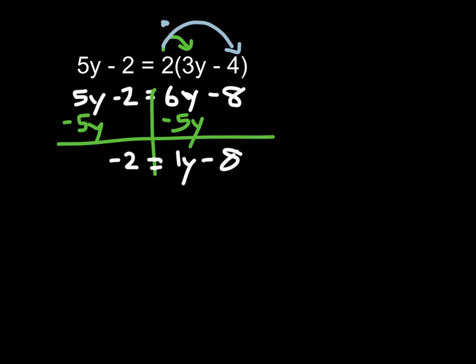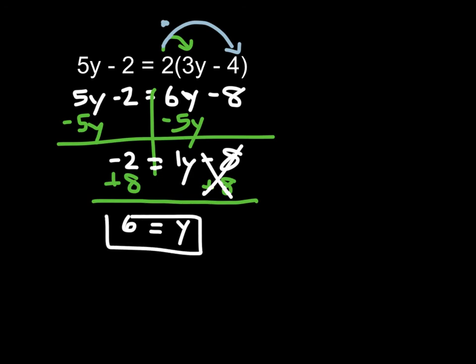Now, we need to get y alone, 1y alone on a side. So we're going to add 8, because negative 8 and positive 8 make 0. We have to do the same thing to both sides. Negative 2 plus 8. Negative 2 plus 8 is 6. And we've got 1y, or just y. Negative 8 and positive 8 become 0. So we have y equals 6.